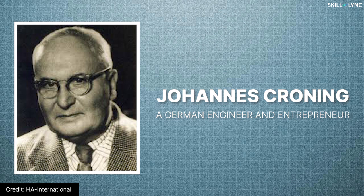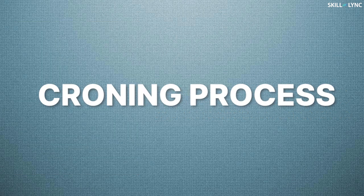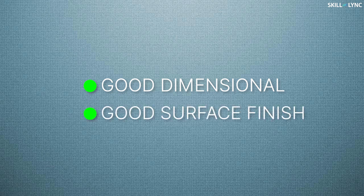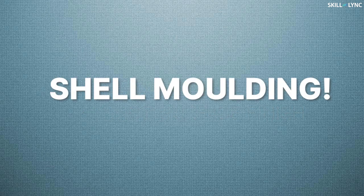Are you wondering who this person is? Well, he is Johann Kroning, a German engineer and entrepreneur. In 1944, he developed a new process in his foundry which became known as the Kroning process. This process of manufacturing parts with good dimensional accuracy and surface finish eventually became known as shell molding or shell mold casting.